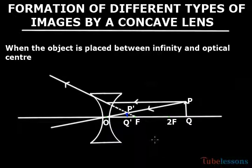Now you see in the figure there is a concave lens L1 L2, and in front of a lens an object PQ is placed.